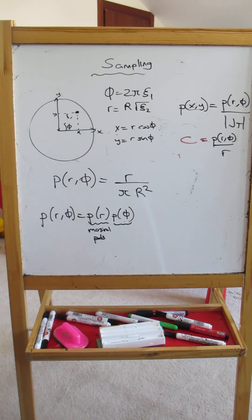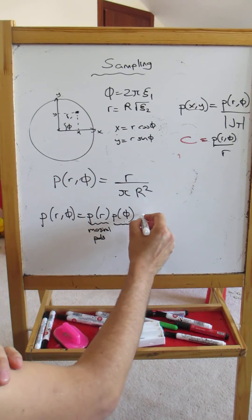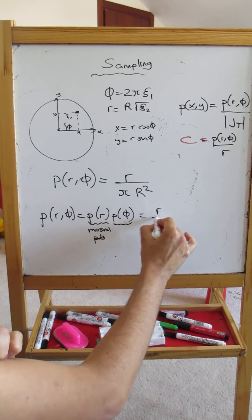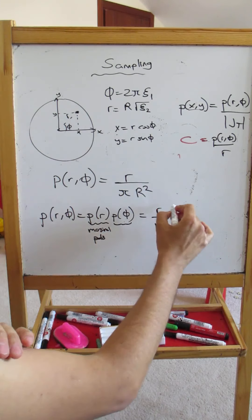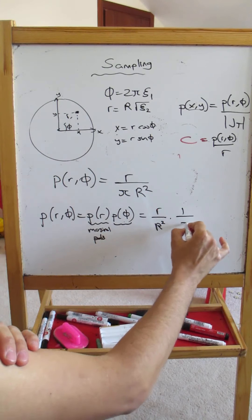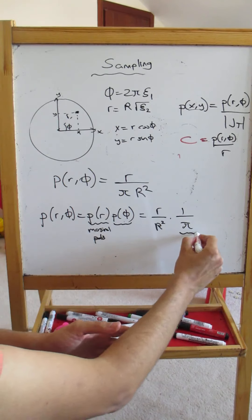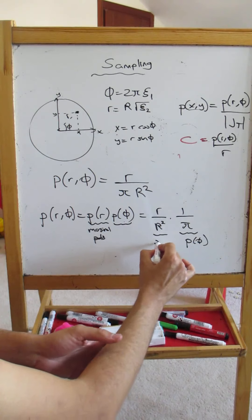So if you actually go ahead and write this as follows - we have r divided by R² and here we have 1/π - if you say this part here is equal to p(phi) and this part here is equal to p(r), this is not going to work well. This is correct, but actually these don't integrate to one in their respective domains.